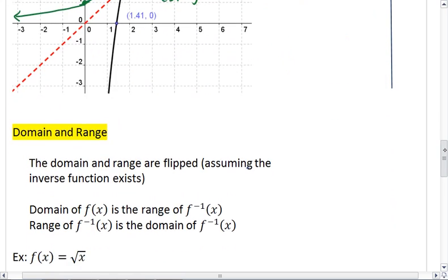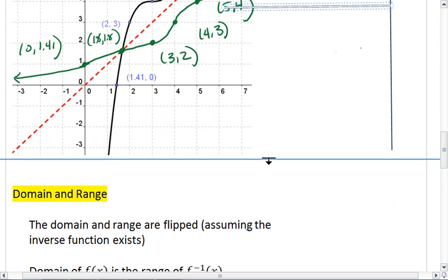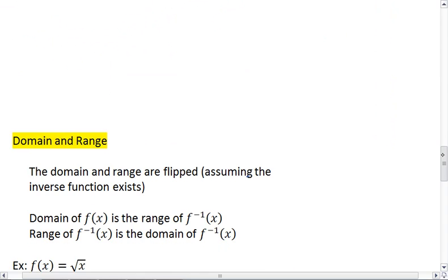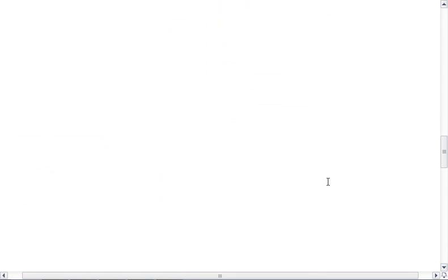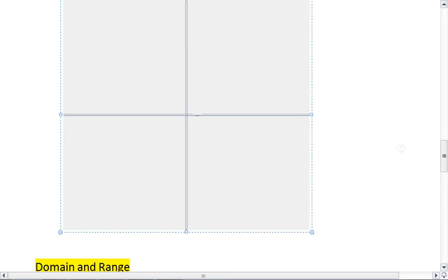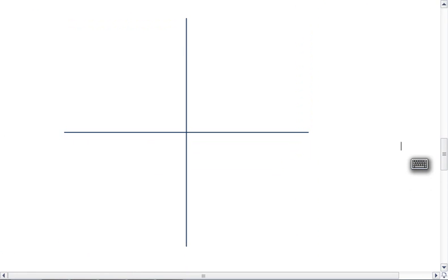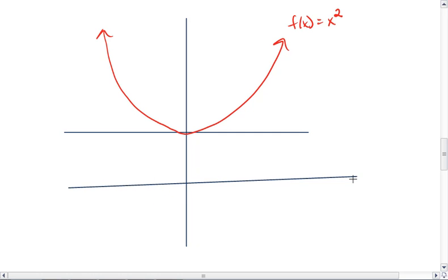But let's look at an example. Say you had the graph y equals x squared or f of x equals x squared. Well, we already know that the inverse won't exist and we can imagine that if we reflected across the y equals x line that would happen. But let's look.